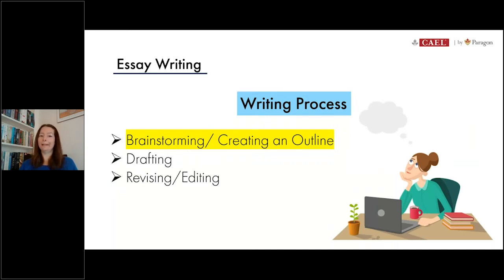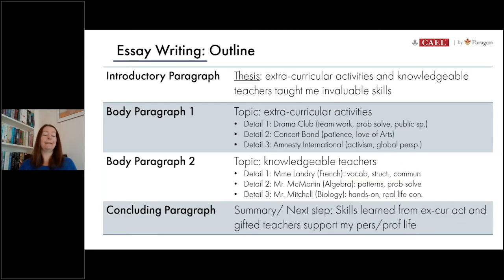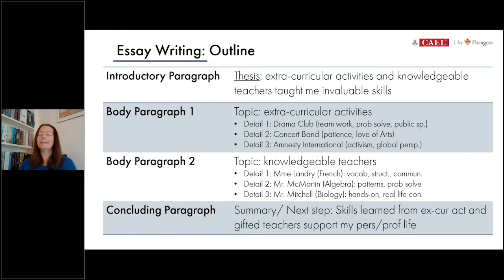Last week we thought about the ideas we wanted to write about and created an outline, which is here before you. We're creating a four-paragraph structure. In the introductory paragraph, we're going to identify the two strengths of our high school education: extracurricular activities and knowledgeable teachers. In the first body paragraph on extracurricular activities, we'll list the clubs we belonged to and identify the skills we learned there to show how they supported our experience.